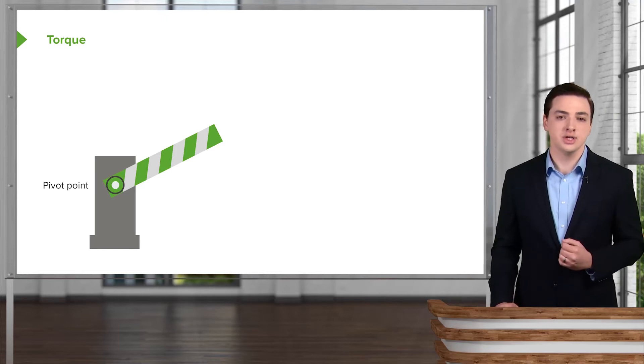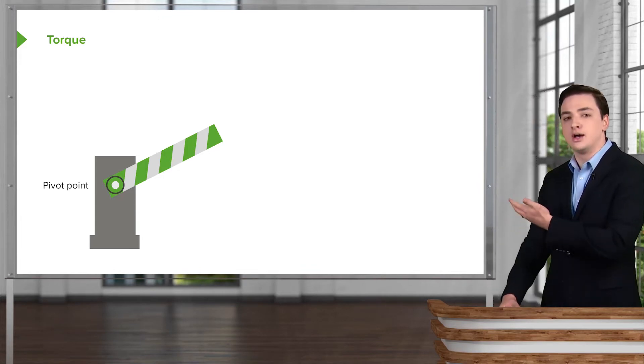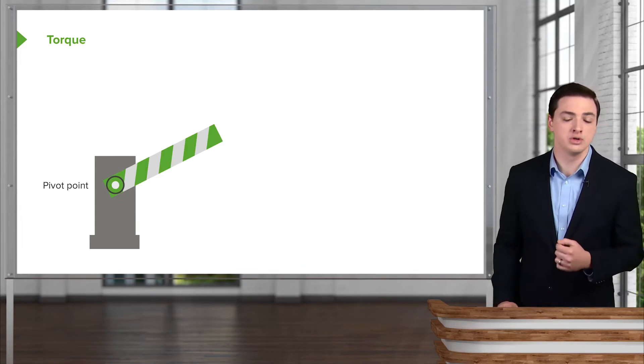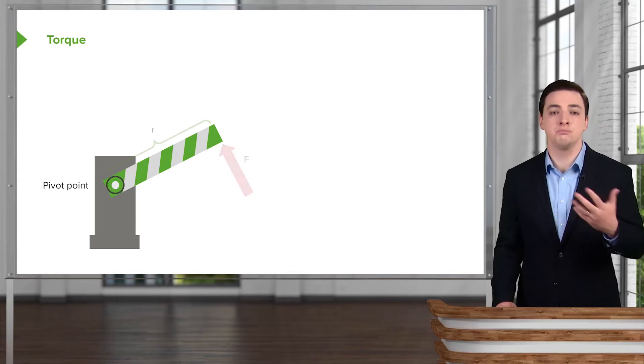The first place we start, just as in the translational motion we picked an origin, is to pick an origin for rotational motion. We'll call this the pivot point because this is the point around which objects will pivot or rotate.